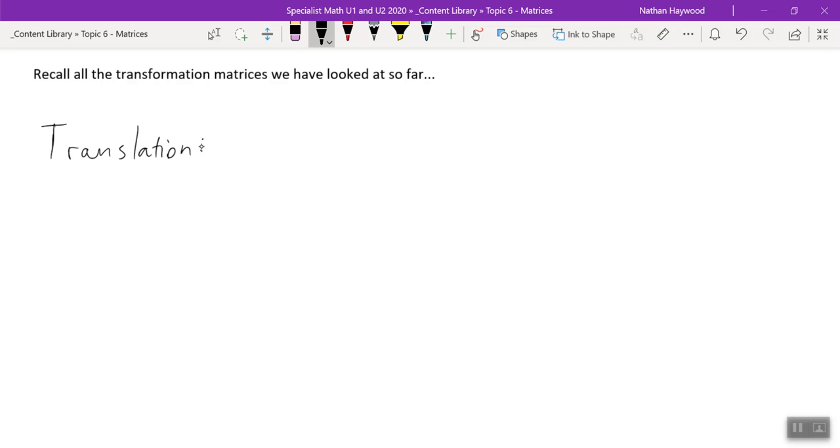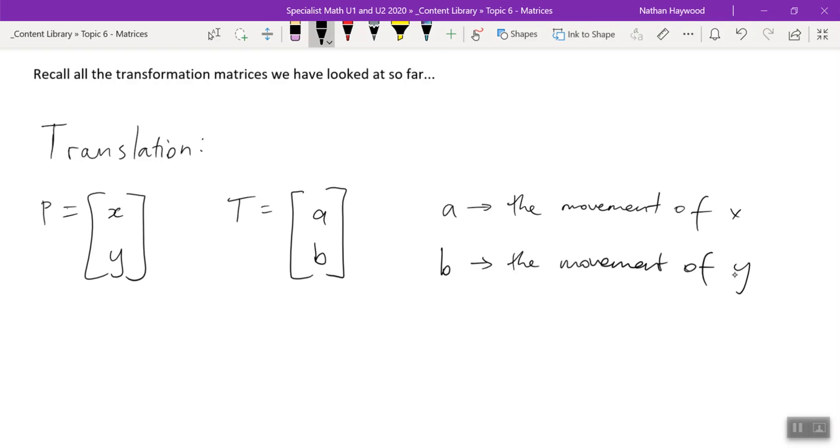The only one that we add is translation. So if we have point P, which is X and Y, what's the translation matrix look like, which we're adding to it? It could be an A and B value, where A is the movement of X and B is the movement of Y. So it's actually translating, it's moving somewhere. That one's pretty easy, you just add them together. The rest of them are multiplying.